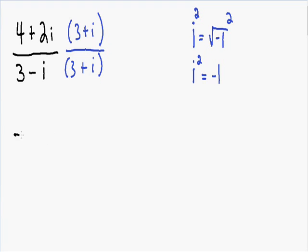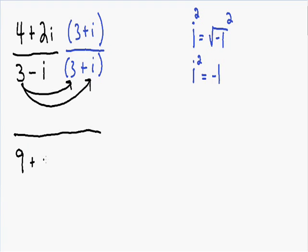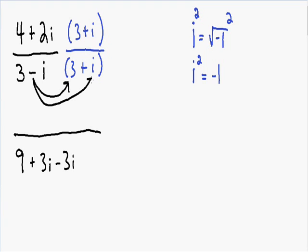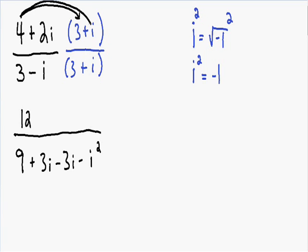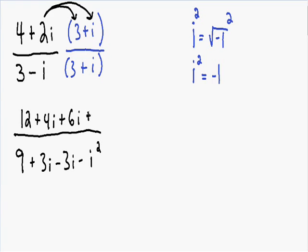Now we have a whole bunch of FOILing to do. I'll start with the denominator. In the denominator, we have 3 times 3, which is equal to 9. We have 3 times positive i, which is equal to positive 3i. We also have negative i times positive 3, which is equal to negative 3i. And we have negative i times positive i, which is equal to negative i squared. Now let's do the same thing for the numerator. We have 4 times positive 3, which is equal to 12. We have positive 4 times i, which is equal to positive 4i. We have positive 2i times positive 3, which is equal to positive 6i. And we also have 2i times positive i, which is equal to positive 2i squared.